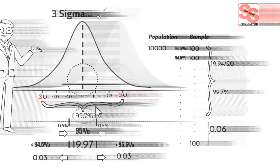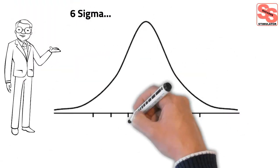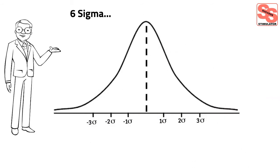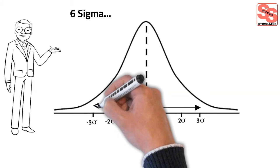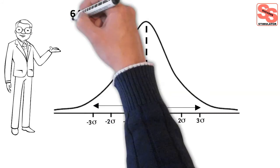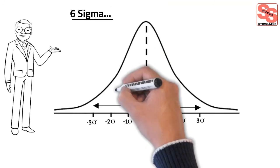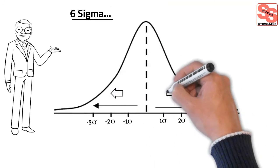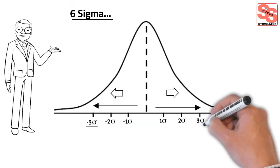Now we'll look at how we arrive at 6 sigma. Six sigma comes from the area under the normal distribution curve after moving 6 standard deviations away from the center — in both sides, 3 sigma in each direction.